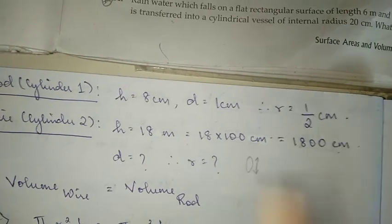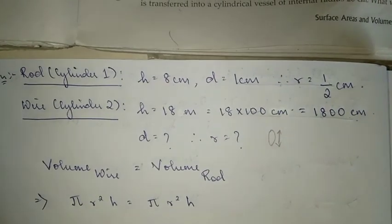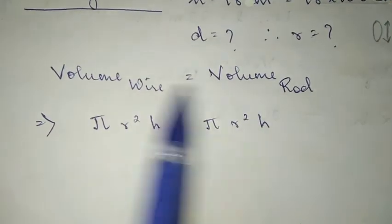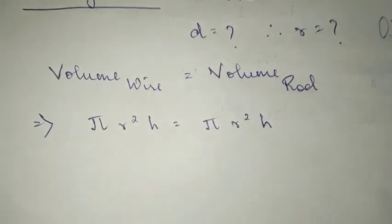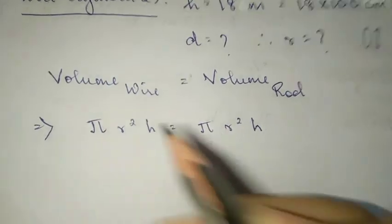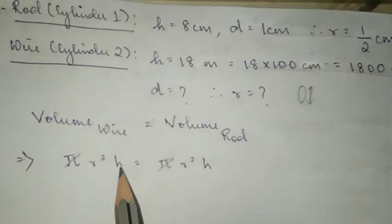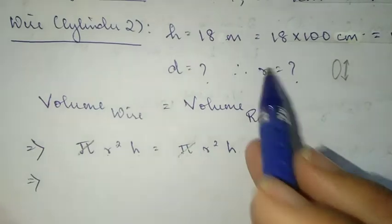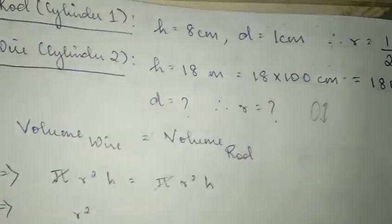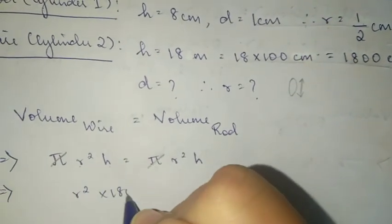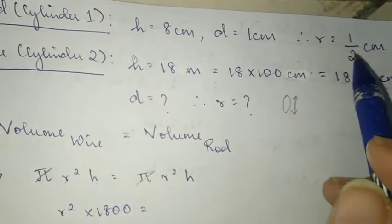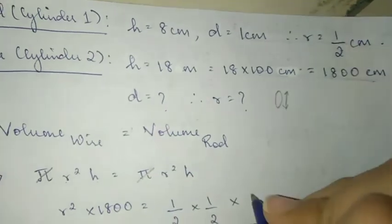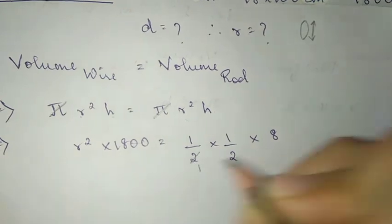The volume of the wire is equal to the volume of the rod. The radius is 1 by 2. We note that 18 meters must be converted: 18 meters equals 1800 centimeters. The rod height is 8 centimeters.